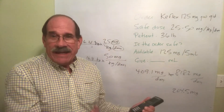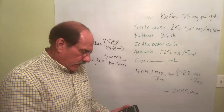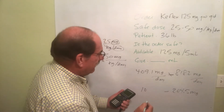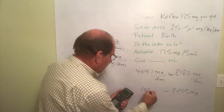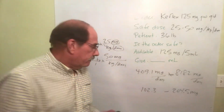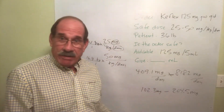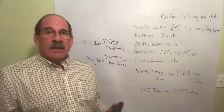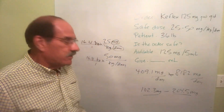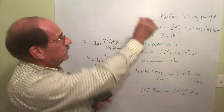Dividing the lower limit by four gives 102.3 milligrams per dose. So the safe amount per dose is anywhere between 102.3 and 204.5 milligrams. That's the per-dose safe range. The doctor ordered 125 milligrams — that's right in the middle — it's safe.